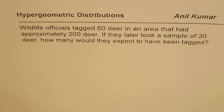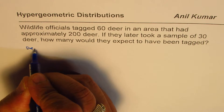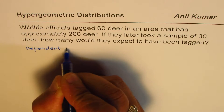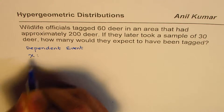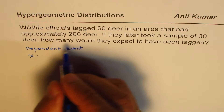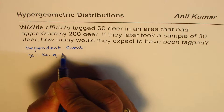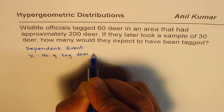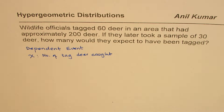This is a clear dependent event. We're talking about dependent events where we are defining our random variable X as the number of tagged deer caught. That is the random variable.